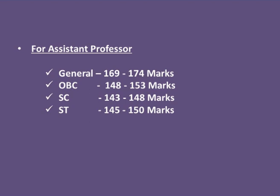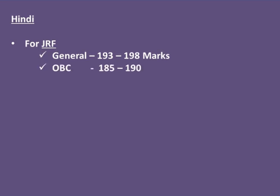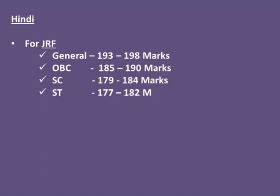Now let us see how much cut-off for Hindi in UGC Net. For JRF, in general category, 193 to 198 marks. For OBC, 185 to 190 marks. For SC category, 179 to 184 marks. For ST category, 177 to 182 marks.